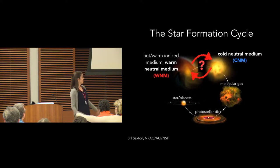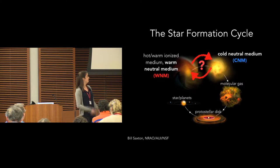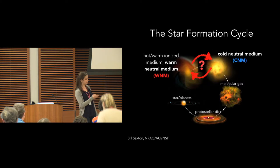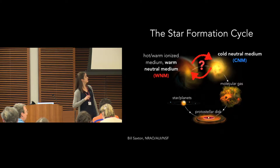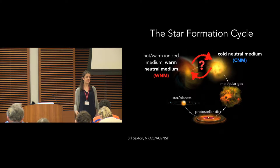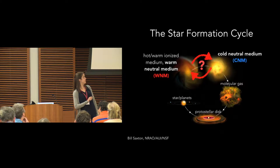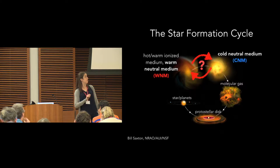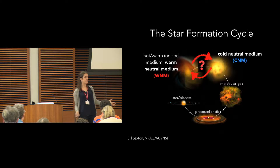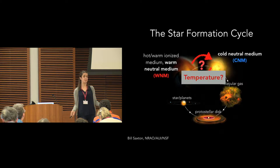As a brief introduction, this is the general picture I'll be talking about. This is our cartoon view of the star formation cycle, and it turns out that H1 makes up a large and important part of this cycle. Material cycles between the warm neutral medium and the cold neutral medium through an uncertain thermally unstable phase, and so an easy question to ask from this diagram is what is the temperature of H1?